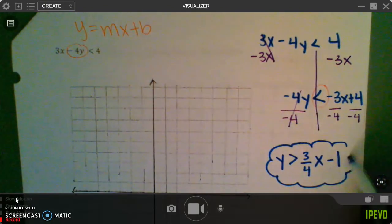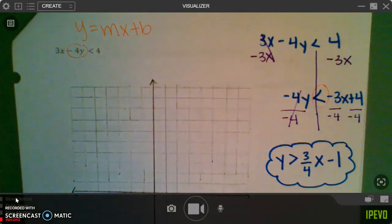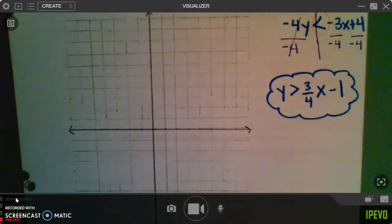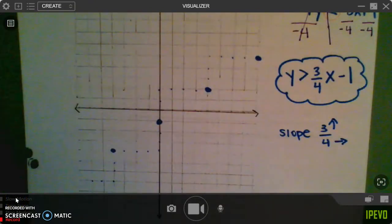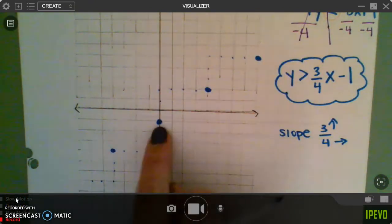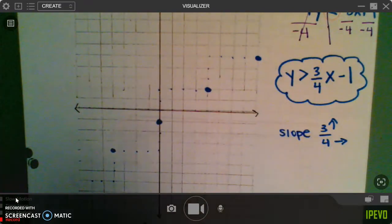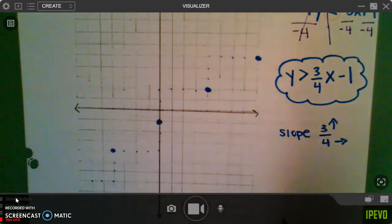So this is the equation we're graphing. We're not even worrying about the original anymore. So go ahead, pause this video, and plot your points. Don't connect your dots or anything yet, just plot the points. So your points should look like mine. I started at negative 1, and I went up 3 and to the right 4.